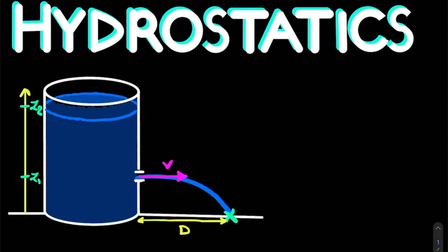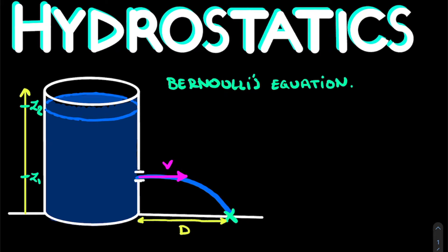Now that we have an intuitive feeling of the mechanics of this problem, let's solve it using equations. We start by using the hydrostatics equation that links pressure with velocity, which is of course Bernoulli's equation. This equation is often used to link pressure with velocity by considering the energy of the fluid at two different points. The two points we compare are the hole where water leaves the tank, and the surface of the fluid at height z2.